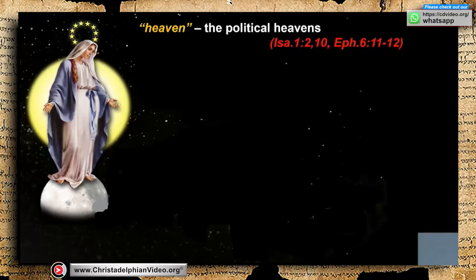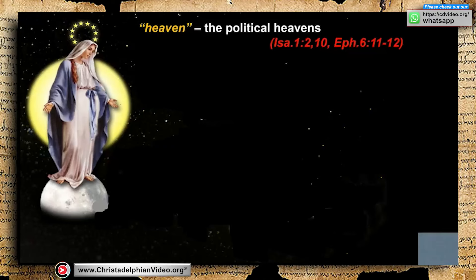Coming to chapter 12, we have the symbol in verse 1 — the wonder of the woman in heaven. Again, heaven is a symbol; it's not talking about God's throne. Heaven and earth are political symbols of the powers that be and the people that are ruled. We can look at Isaiah 1 — the Lord time and again takes us back to the Old Testament. Isaiah 1:2: 'Hear, O heavens, and give ear, O earth.' Is he talking about God's throne and the literal earth? Coming to verse 10: 'Hear the word of Yahweh, ye rulers of Sodom, and you people of Gomorrah.' There are your heavens and your earth — the ruling authorities and the people that are ruled.